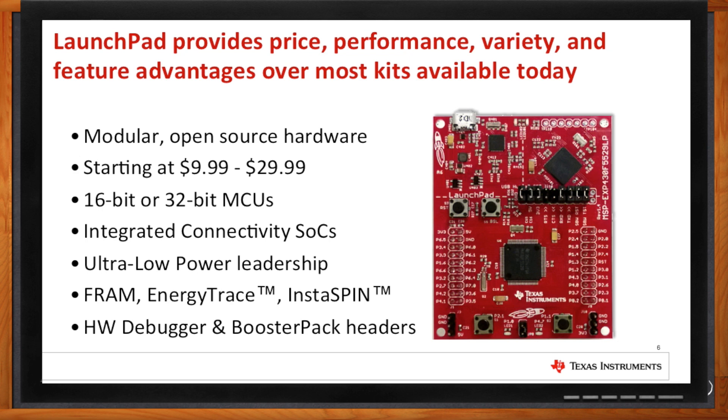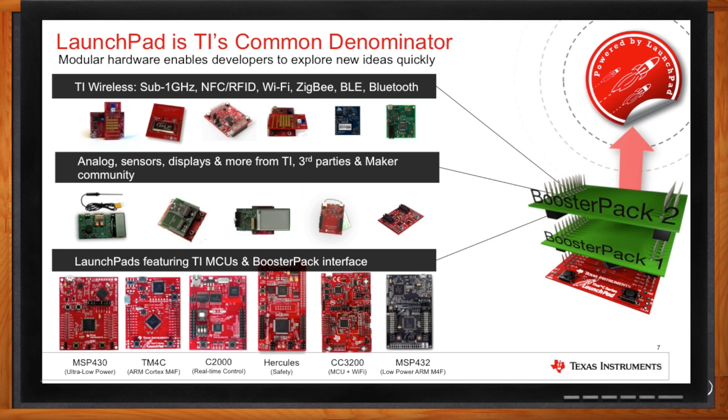Technologies like FRAM, Energy Trace, and Instaspin really differentiate TI silicon. But the Launchpad ecosystem is really unique because of the hardware debugger and the booster pack headers. The booster packs are TI's way of expanding and adding modular hardware to these Launchpads. It includes stuff like TI's wireless portfolio — sub-gig, NFC, Wi-Fi, ZigBee, BLE, and Bluetooth — but we also have a lot of offerings from third parties like analog, sensors, displays, and even some from the maker community.